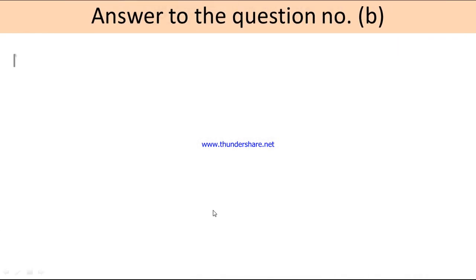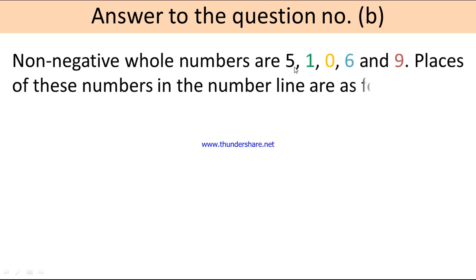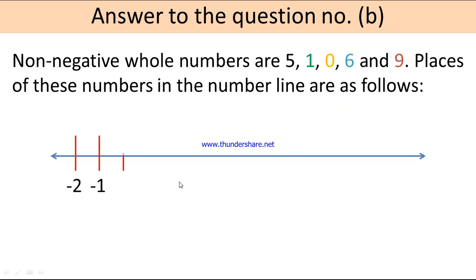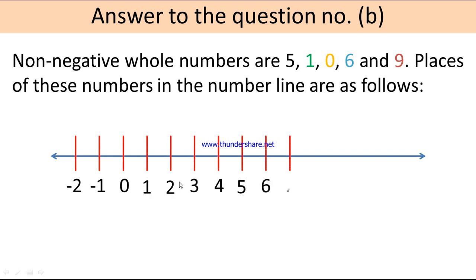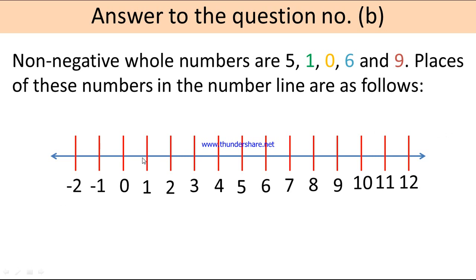Answer to question number B. The non-negative whole numbers are 5, 1, 0, 6, and 9. I will now place these numbers on the number line. Here is the number line: first placing 5, then 1, then 0, then 6, and then 9.